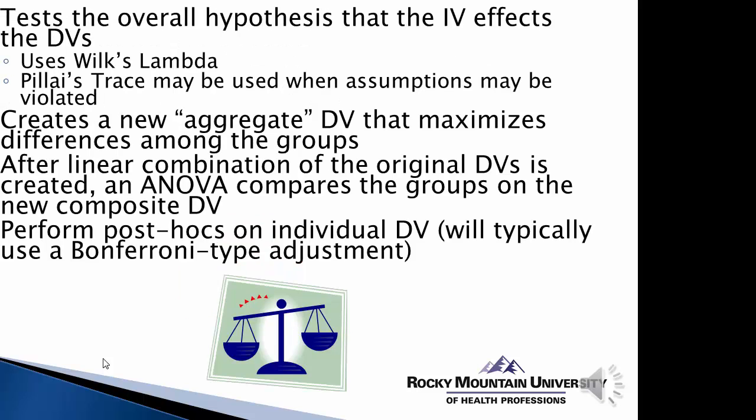The logic of MANOVA is that, as mentioned, it is an omnibus test. It first tests the overall hypothesis that the independent variable affects all the dependent variables together — is the level of response across all outcomes statistically significant? The test statistic used, rather than an F-score, is known as Wilks' Lambda. We also sometimes use Pillai's trace, which can be used when assumptions like equal variance may be violated. The formula creates a new aggregate dependent variable that maximizes the differences among the groups, and if there are differences, they will show up in that initial omnibus test.